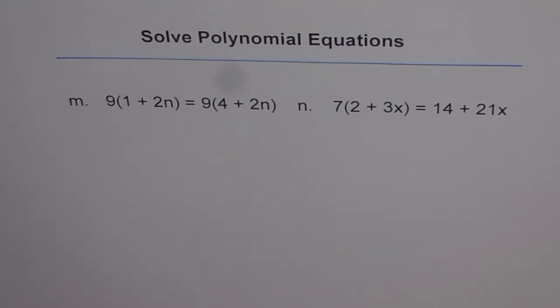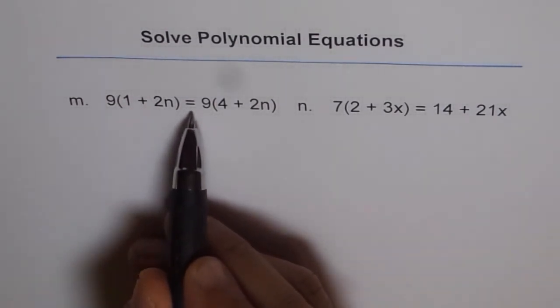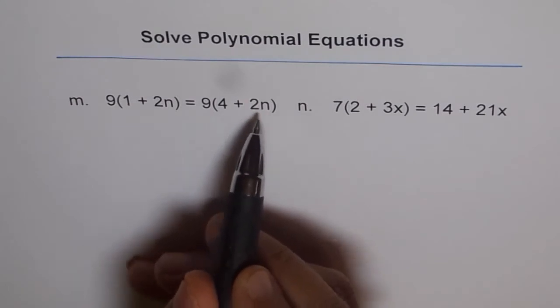So here is an example which is kind of like that. Let's see this. Now we have 9 times 1 plus 2n equals to 9 times 4 plus 2n.